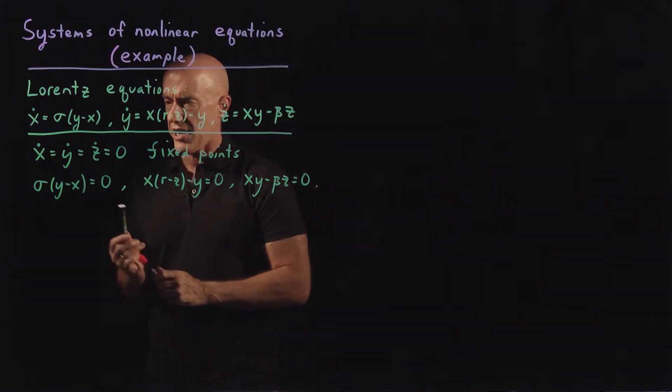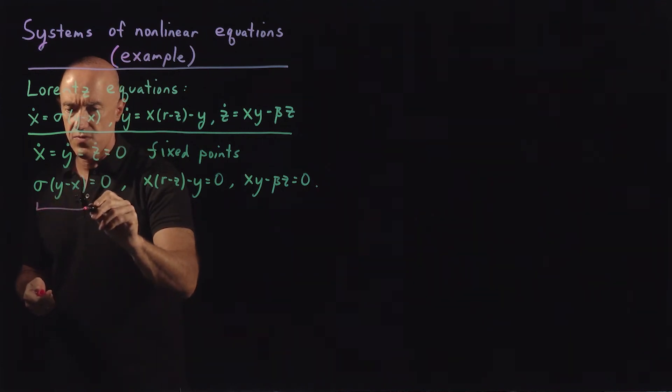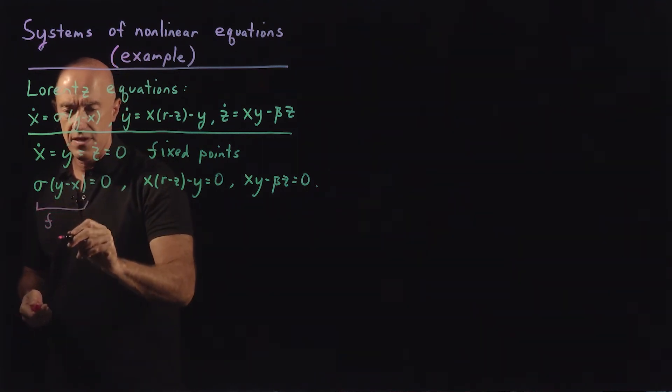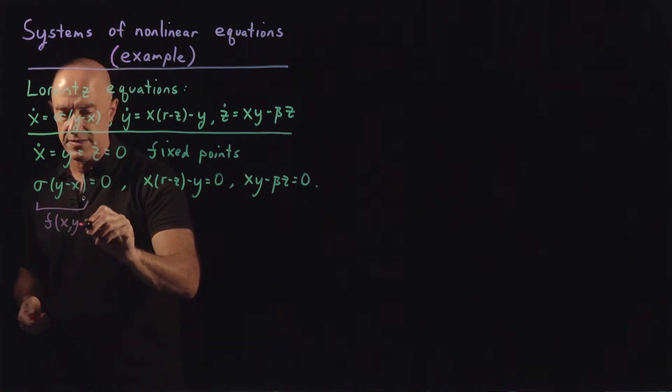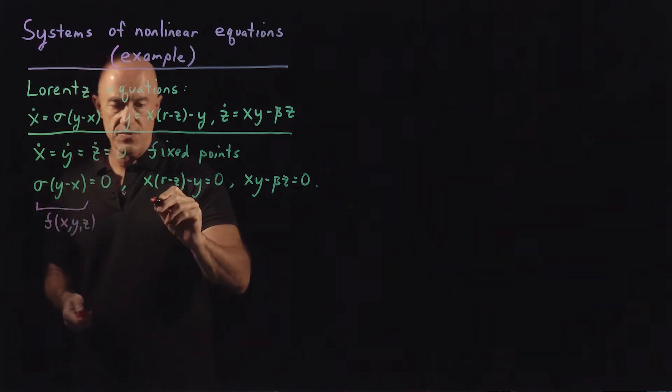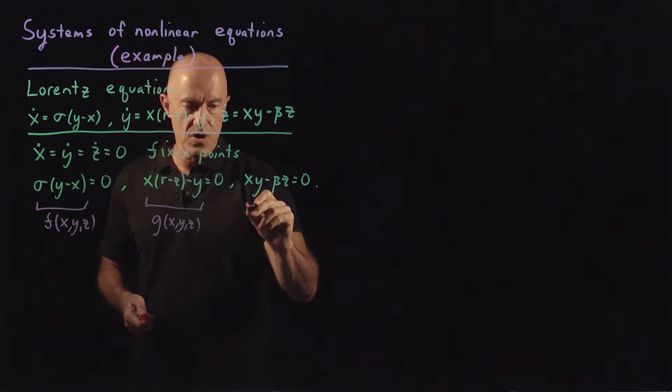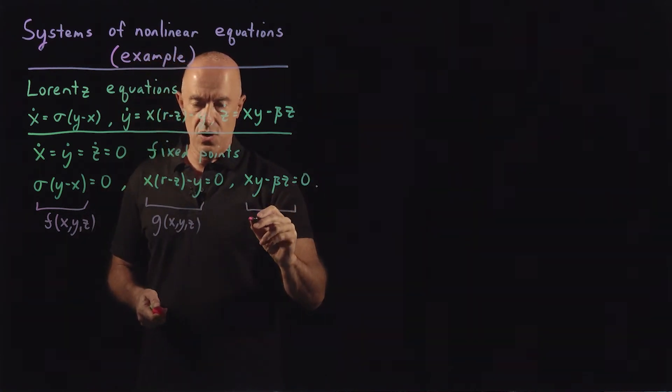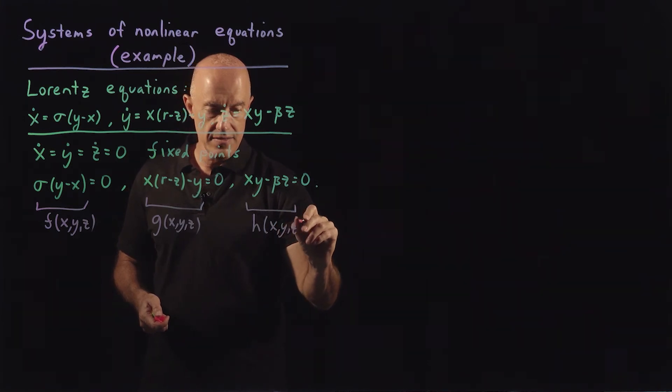So this function here we can call f. So this one is our f of x, y, and z. There's three variables here: x, y, and z. This one here I'll call g of x, y, and z, and this one here I'll call h of x, y, and z.